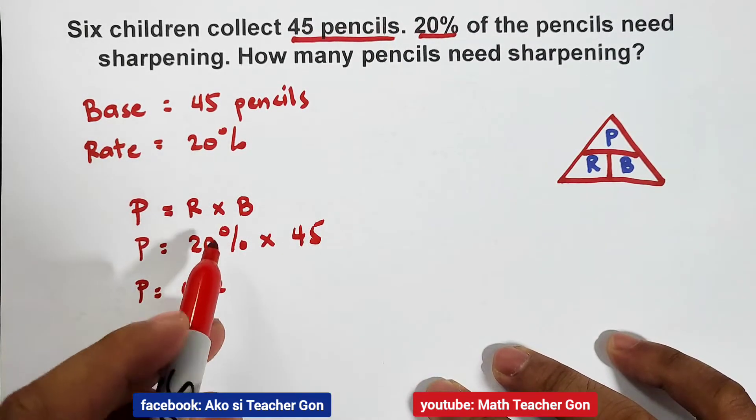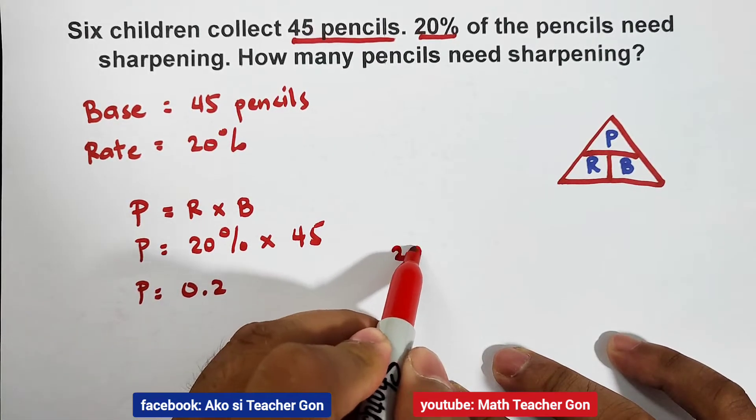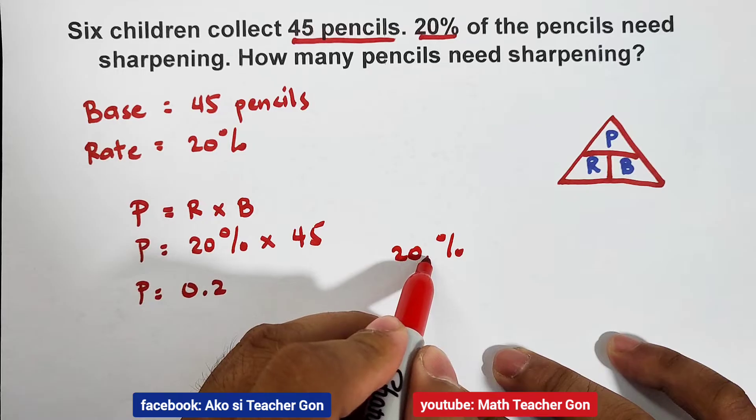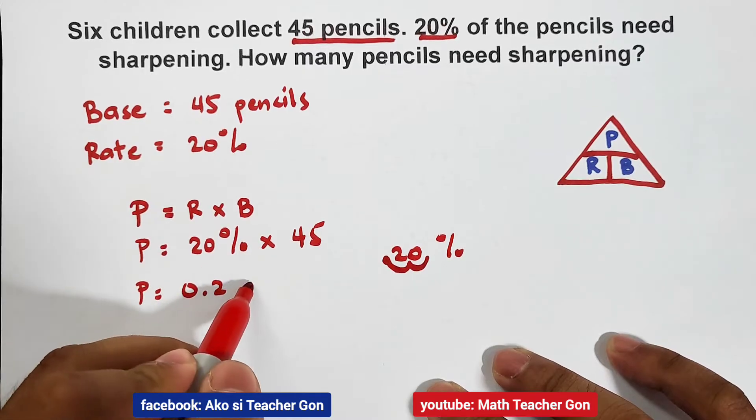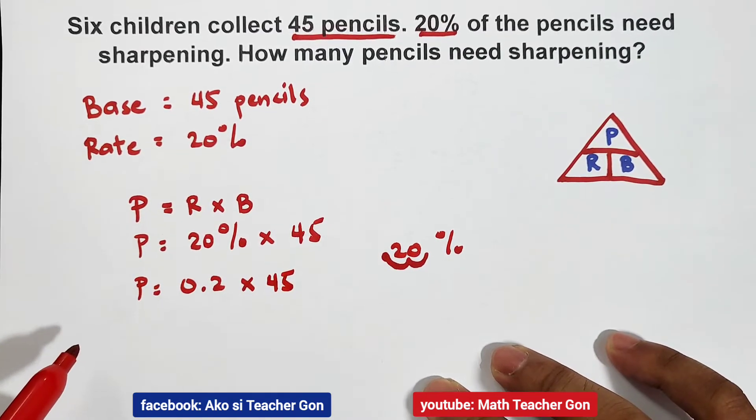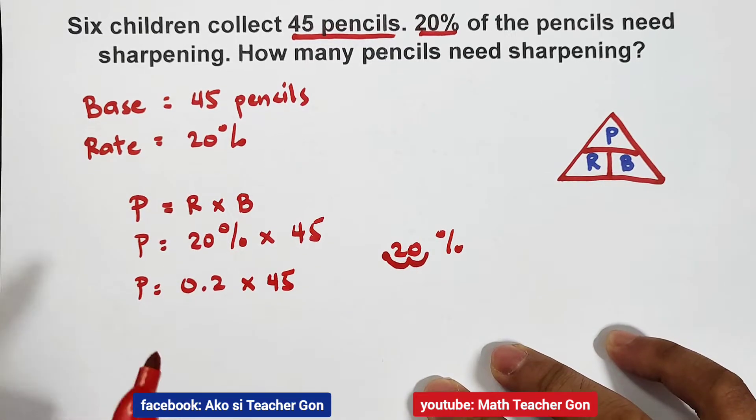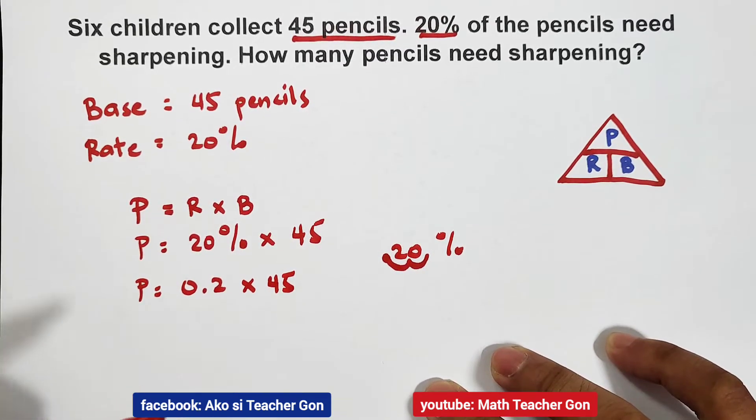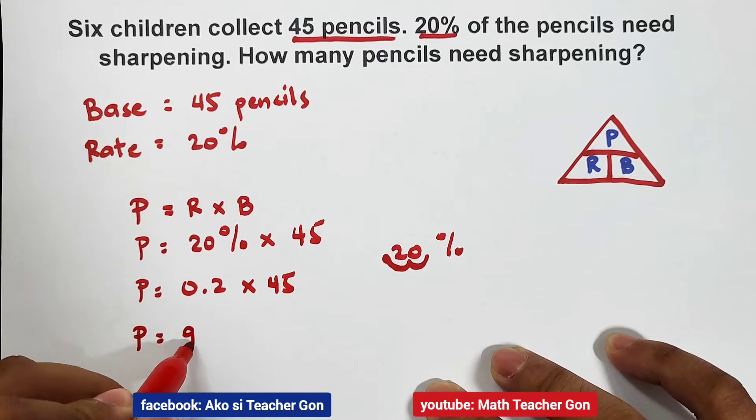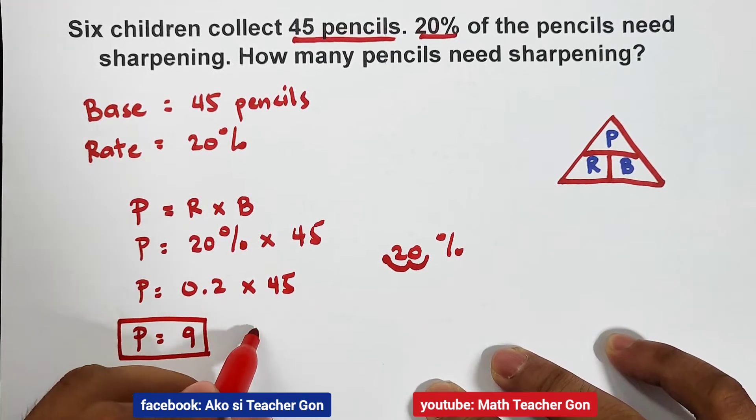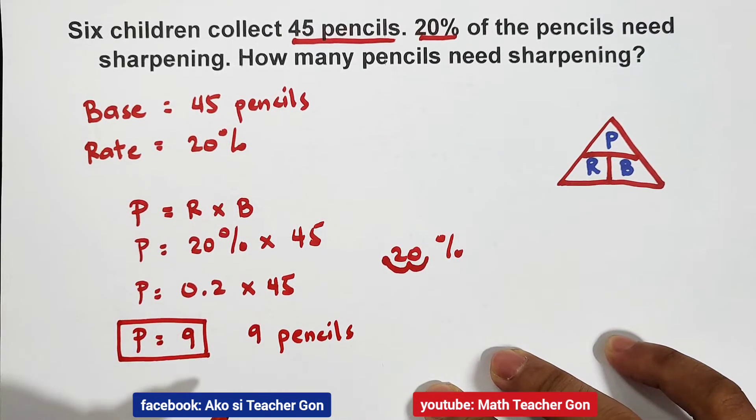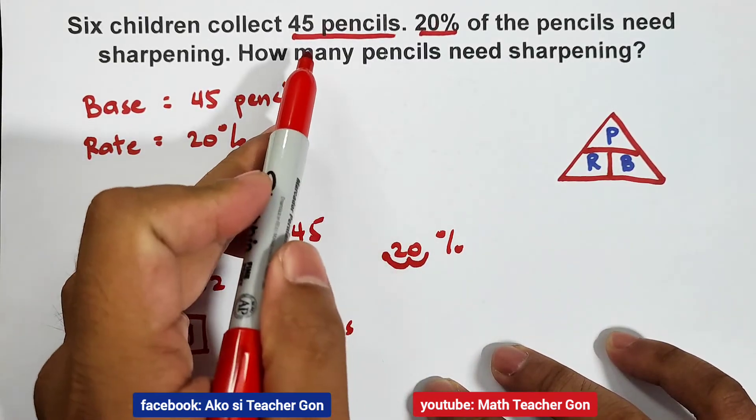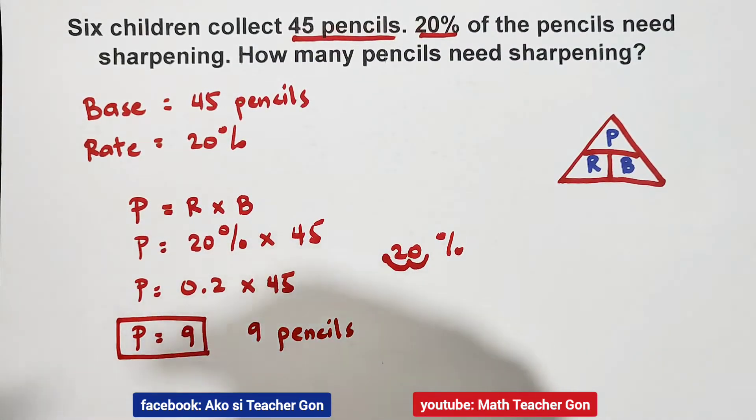How did that happen? The 20%, starting here, move two decimal places: one and two. And as you can see, you have 0.2, then times 45. Multiplying, whether you do manual computation or use a calculator, multiply 0.2 by 45, the answer is 9. Your percentage is equal to 9. Meaning, we have 9 pencils that need sharpening, or that is equivalent to 20% of the original number of pencils.